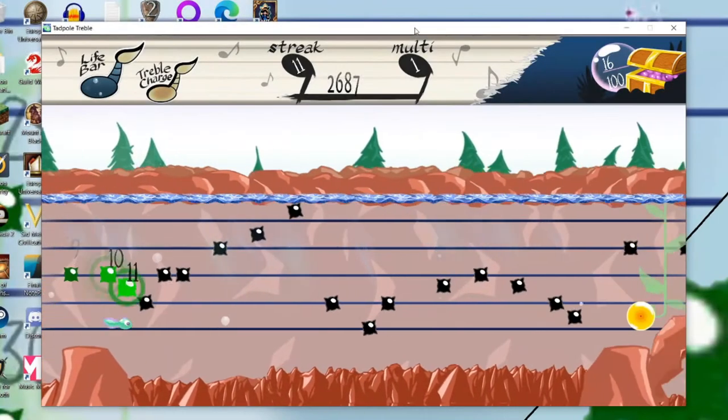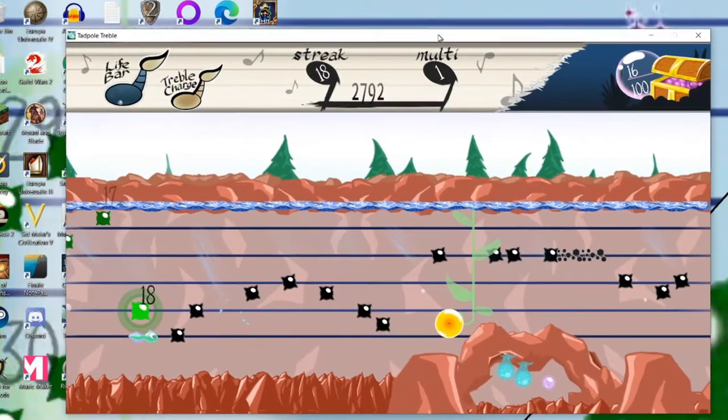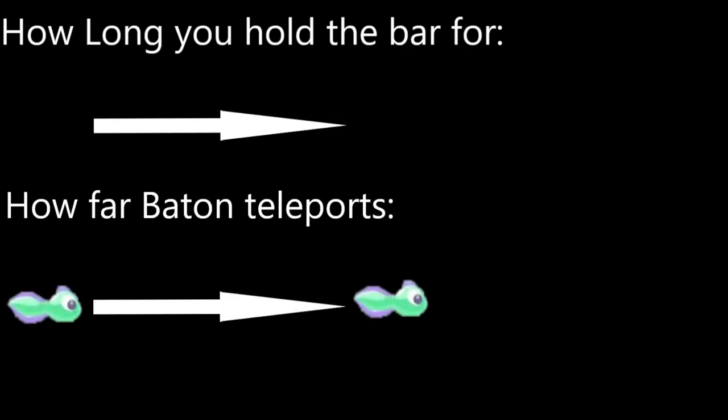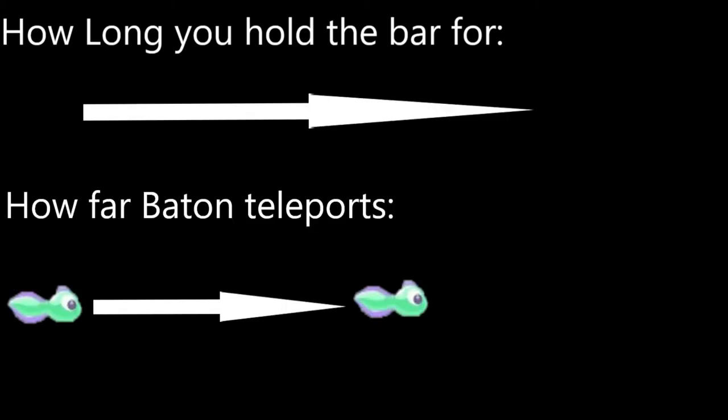Now, to pull off the glitch, all you need to do is grab and hold the bar above the game, and she'll teleport as far as you would as if you've never grabbed the bar in the first place, up to a certain point, that is.